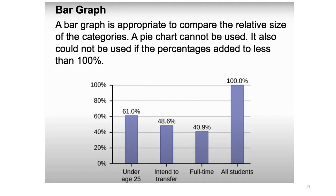This is the main difference between a bar graph and a pie chart. You can see that all students will add up to 100%. But from all students, those who are full-time is 40.9%, those intending to transfer to a four-year institution is 48.6%, and those under age 25 is 61%. Because these do not add up to 100%, it is better to use the bar graph.